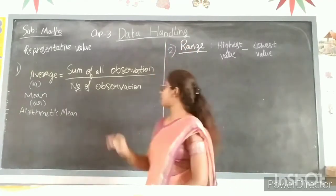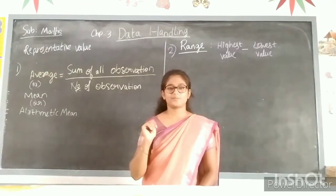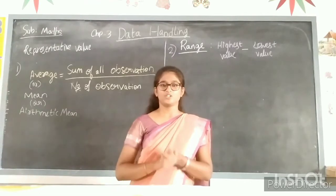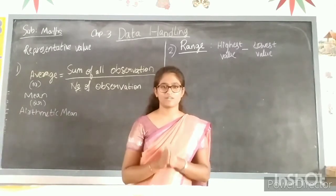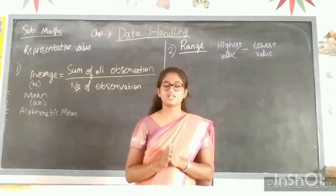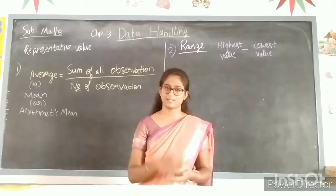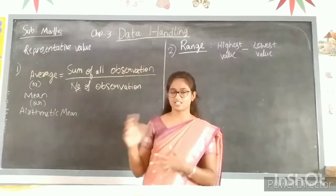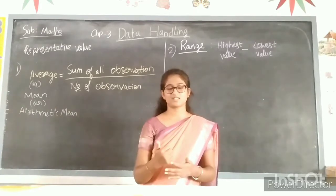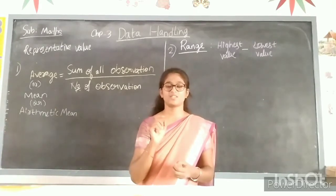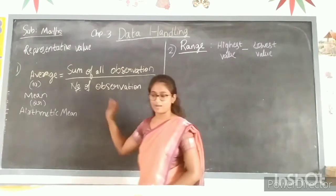The first one is average, or mean, or arithmetic mean. Students, when you have a test or exams you will be getting marks for all your subjects. So you will find the average of the marks that you have got in all the subjects. When you find the average, you are going to add all the subject marks and divide by the number of subjects. Average is nothing but the sum of all observations divided by the number of observations.